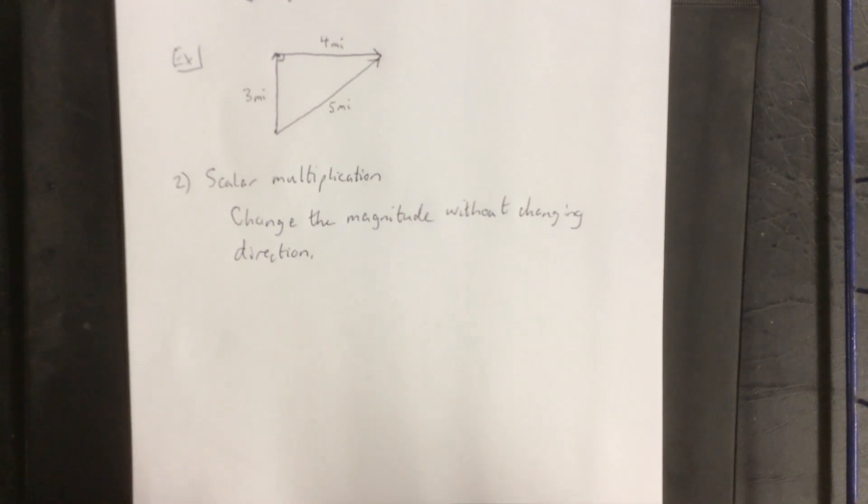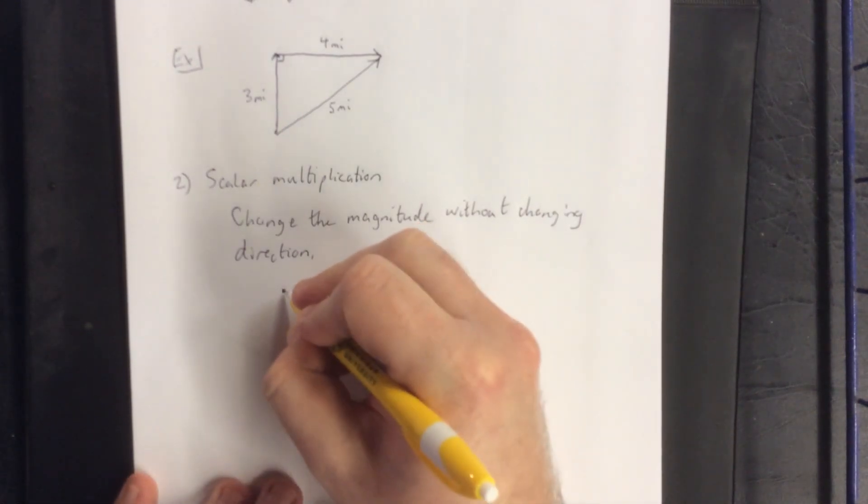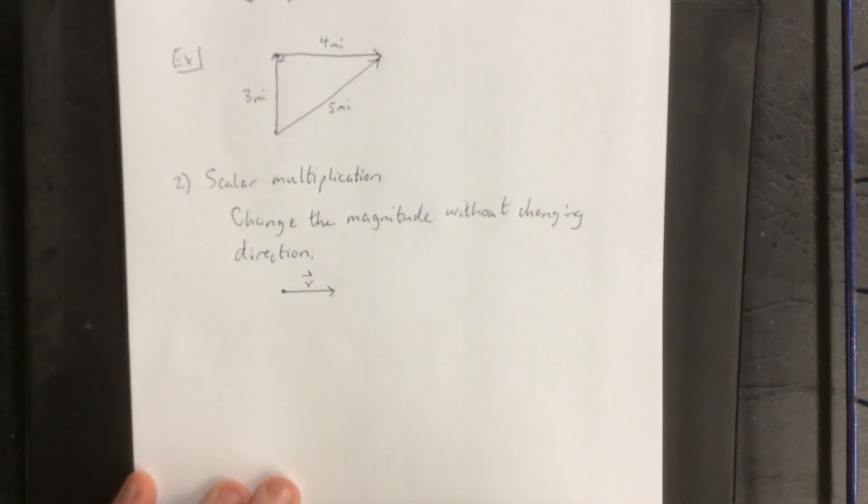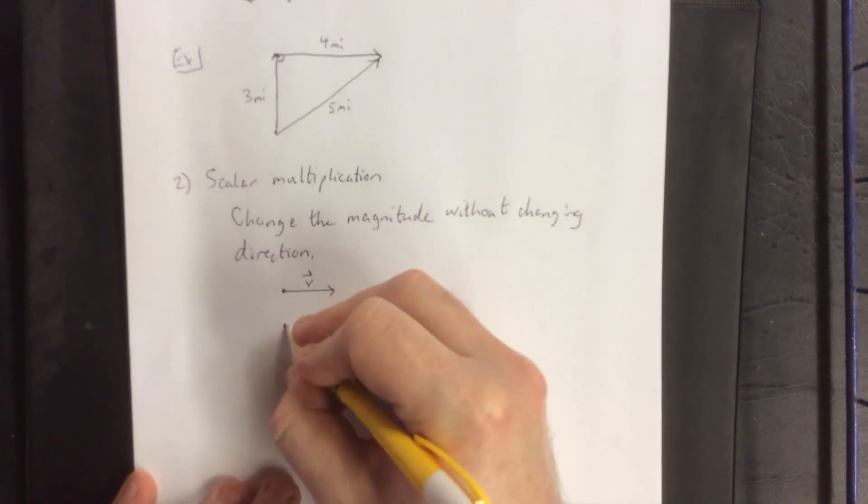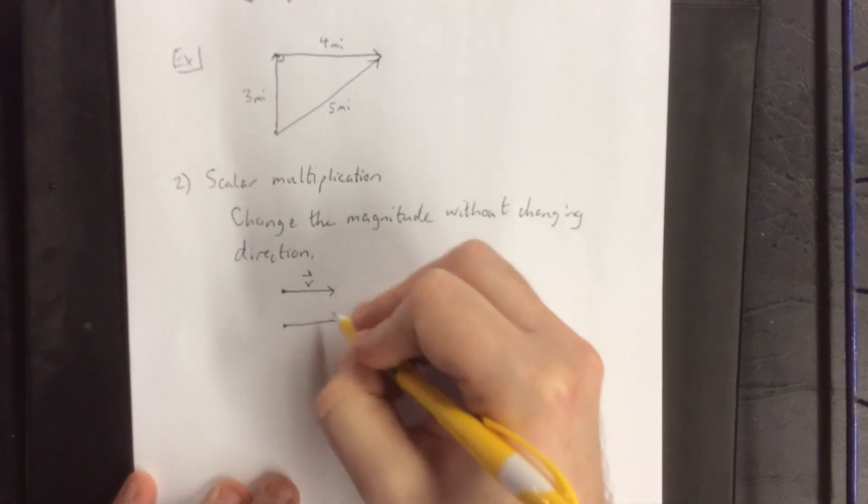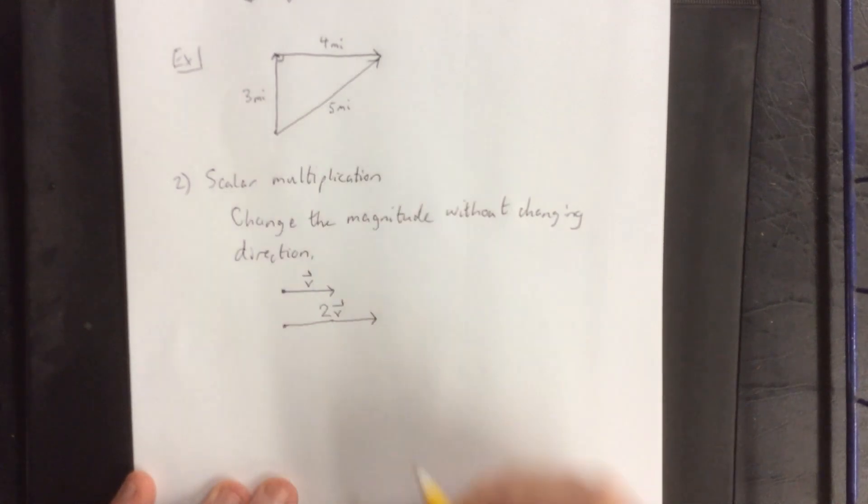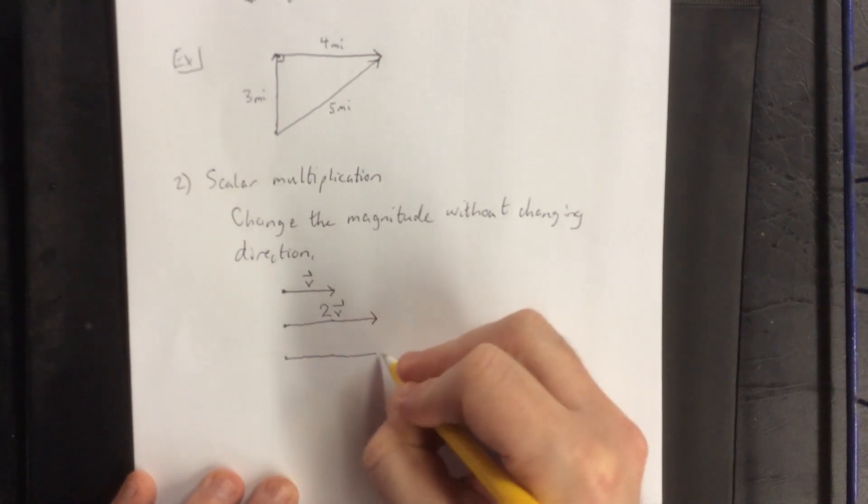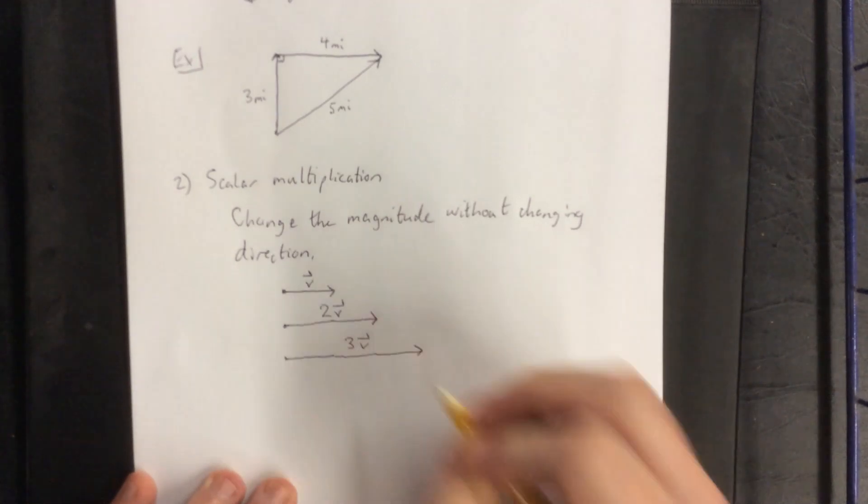You could think of this as being like go twice as far in a given direction or push three times harder. So if we have a vector, a vector has a certain length associated with it, we'll call that vector v. If I were to create a vector that is twice as long as this vector and points in the same direction, this vector would be represented by 2v. If I wanted to go three times longer, so one, two, three, pointing in this direction, this would be considered 3v.